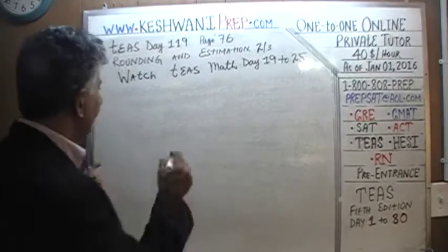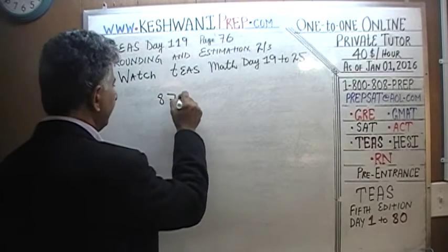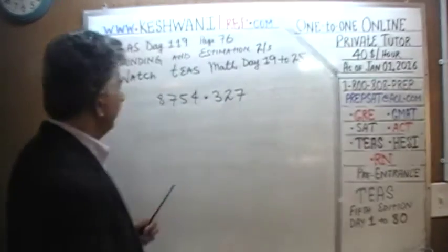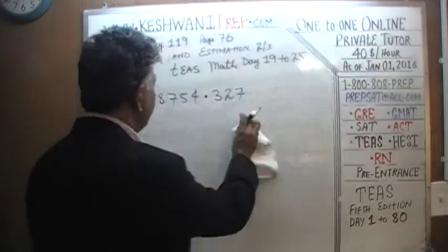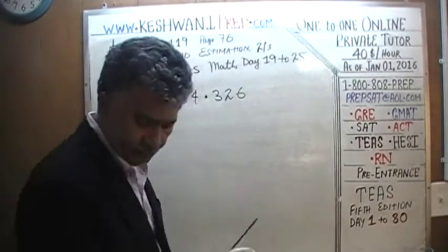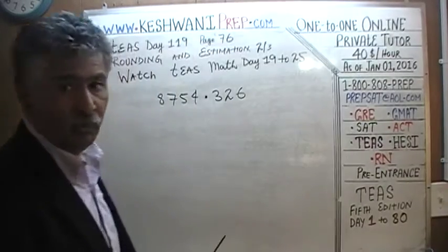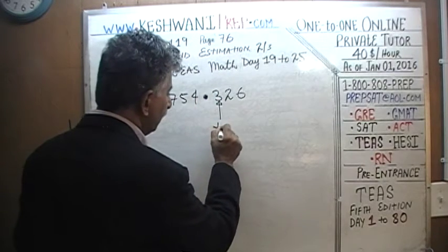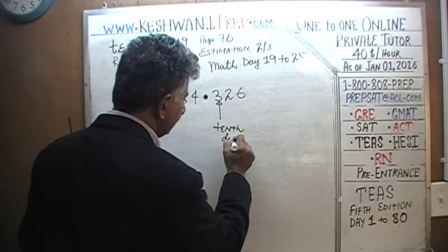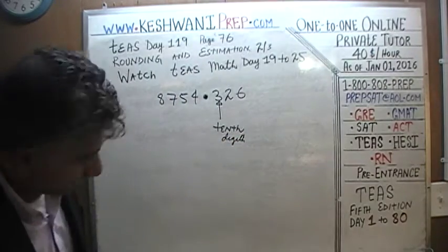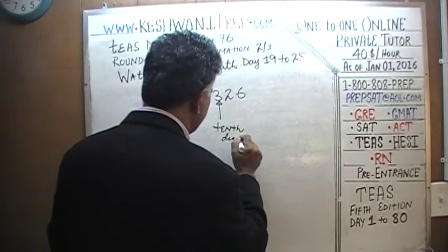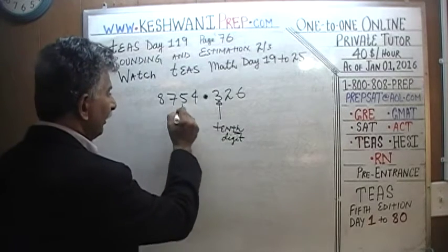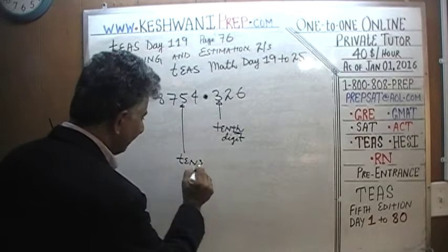For example, if we have 8754.3236. Do you know what each one of these digits is called? Let's begin with after the decimal. What is this digit called? This is called the tenths digit. Make sure you note: tenths digit, as opposed to the tens digit.